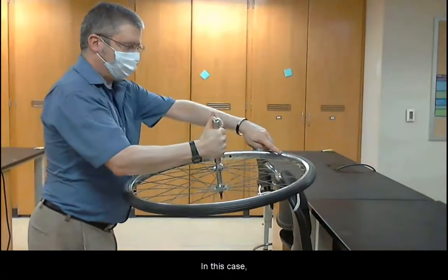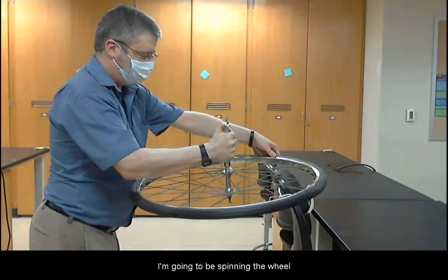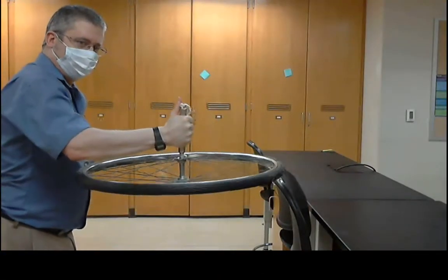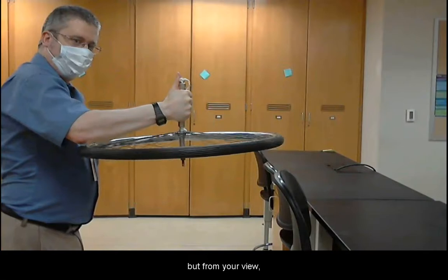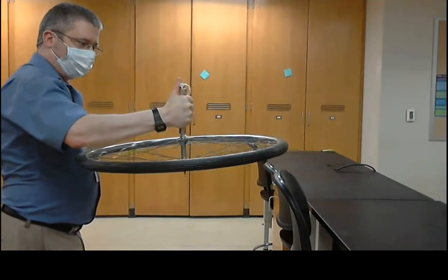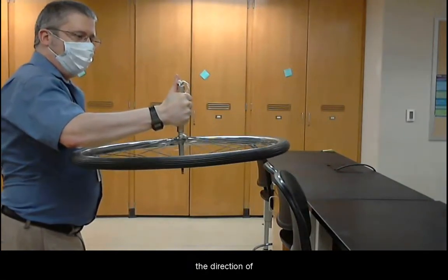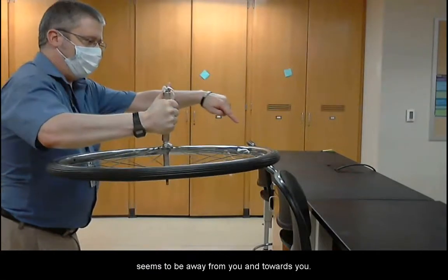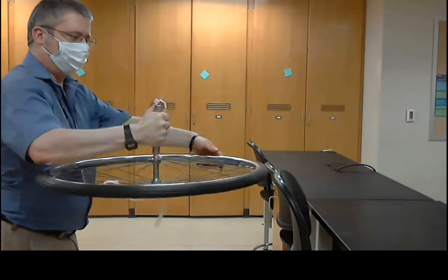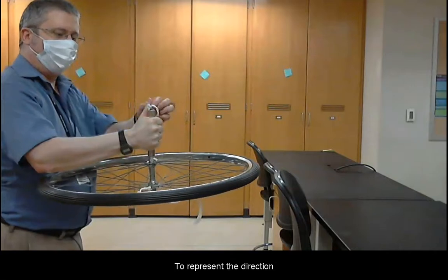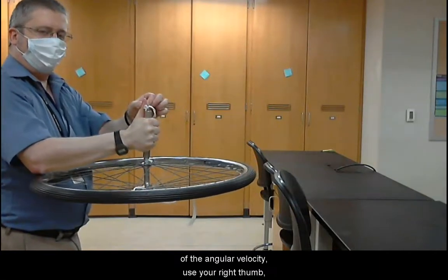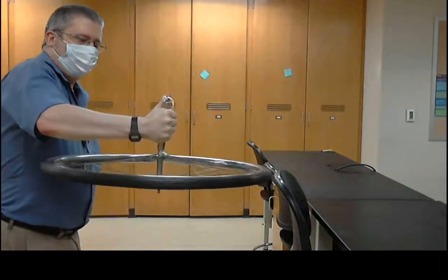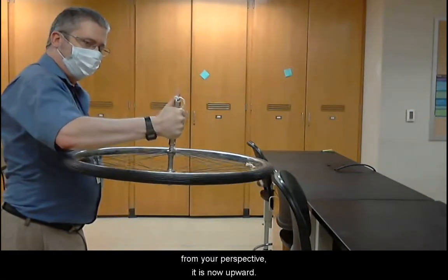In this case, I'm going to be spinning the wheel counterclockwise as viewed from top. But from your view, the direction of spin seems to be away from you and towards you. To represent the direction of the angular velocity, use your right thumb. From your perspective, it is now upward.